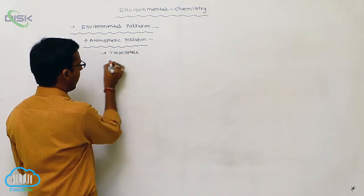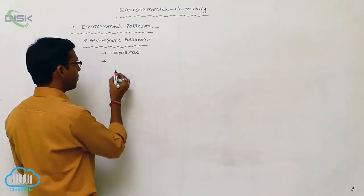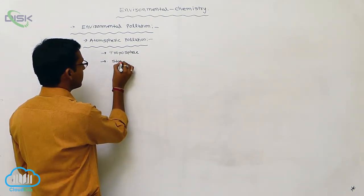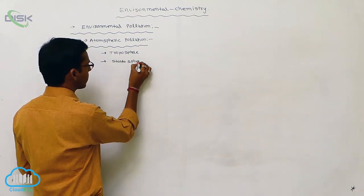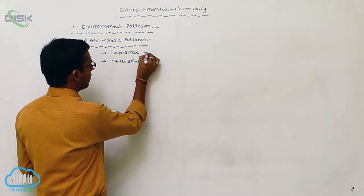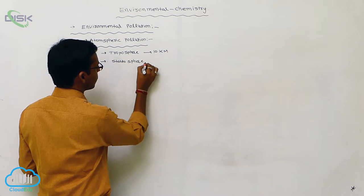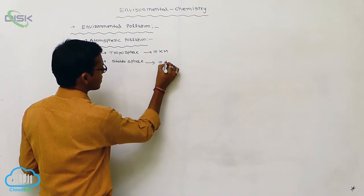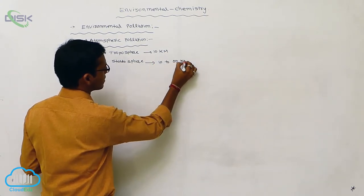The next layer, from 10 km to 50 km distance from sea level, is called the stratosphere.